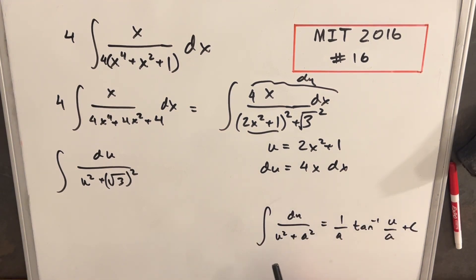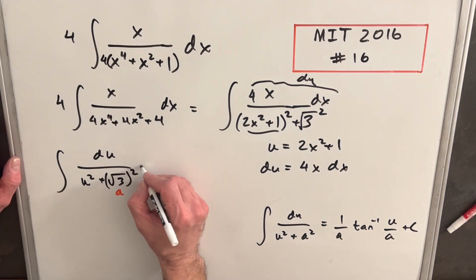And then from here, we just want to recall this arctan formula. This integral, if we have the integral of du over u squared plus a squared, it's just 1 over a, tan inverse u over a plus c. And we have our a right here. It's going to be our square root of 3. That's why I did that. So then let's just use our formula.